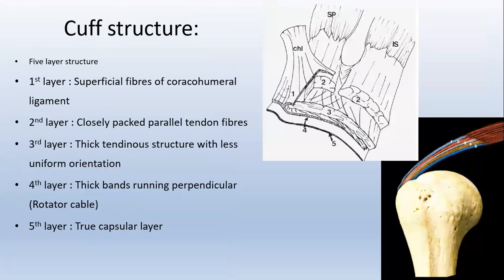The rotator cuff has five layers. The first layer is the superficial fibers of the coracohumeral ligament. The second layer is closely packed parallel tendon fibers. The third layer is a thick tendinous structure with less uniform orientation. The fourth layer is thick bands of the rotator cable. The fifth layer is the true capsular layer.